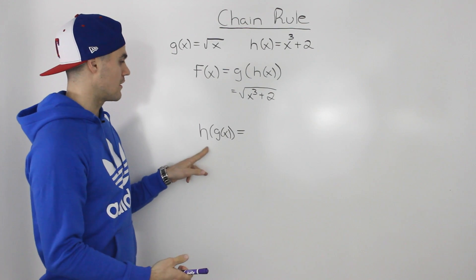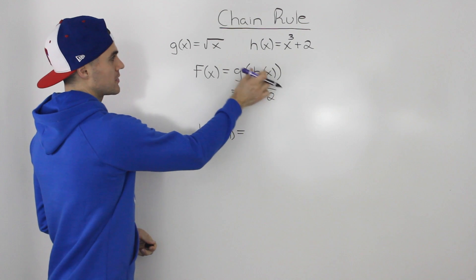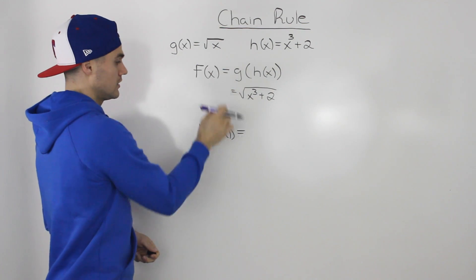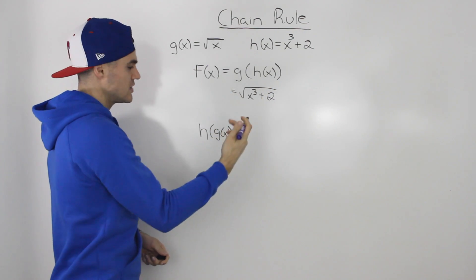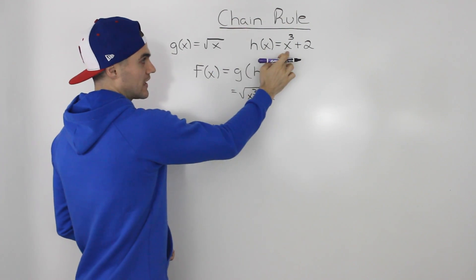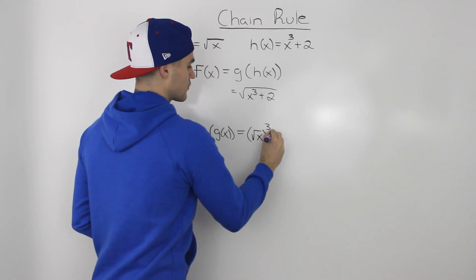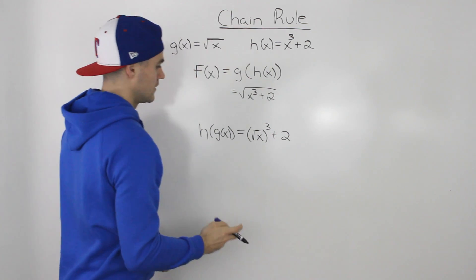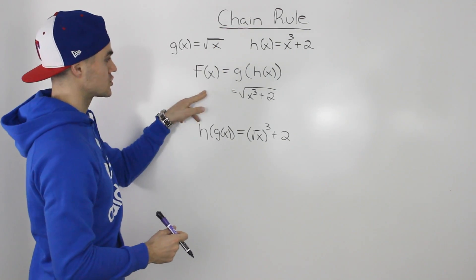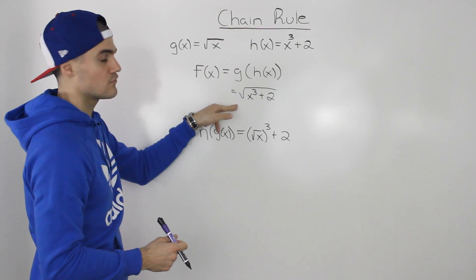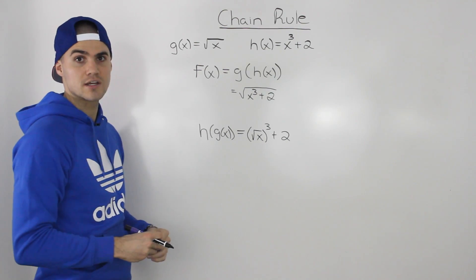We can also make another composite function h of g of x. Instead of the h expression going into the x value for the g function, the g expression goes into the x for the h function. So we plug in the square root of x for the x value in h of x, giving us the square root of x to the power of three plus two. That's another composite function we can make, though I'm going to concentrate on the original function for the rest of the video.